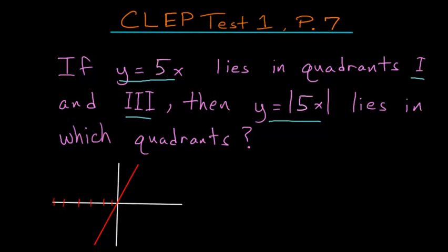So essentially the absolute value function looks something like this, where the blue part and the red part in quadrant 1 are the same. Remember, this is quadrant 1, this is 2, this is 3, and this one here is 4.